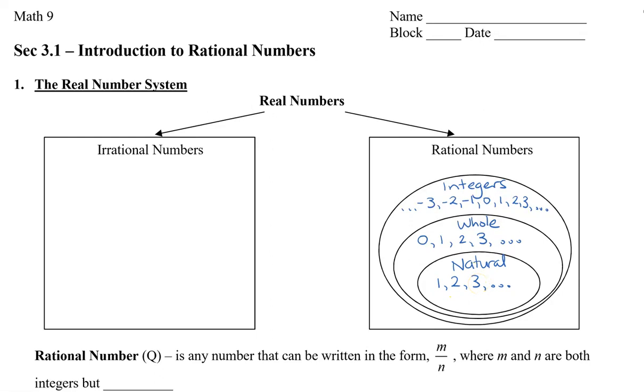And then finally, all of these numbers, the natural, the whole, and the integers, they make up our rational numbers. But there are other numbers besides integers, whole and natural, that are part of the rational number system. So we can have repeating decimals.